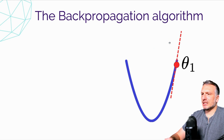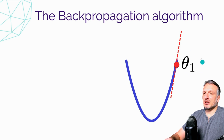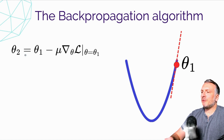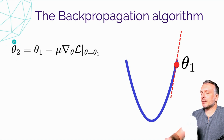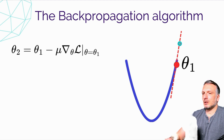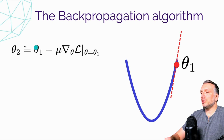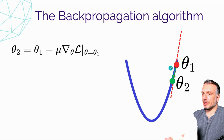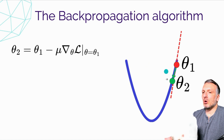Let's look at an example of the gradient descent algorithm. Imagine we start at a specific point on this curve — a specific value for all the parameters in the network. The goal of gradient descent is to find a better set of weights. Starting from the initial point theta one, we follow the tangent: the gradient indicates which direction to follow to decrease the loss function. We move to a new point by descending the curve following the gradient. The parameter mu is a learning rate hyperparameter that controls how far we move.